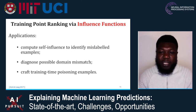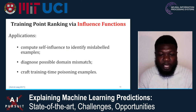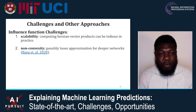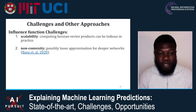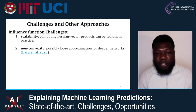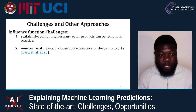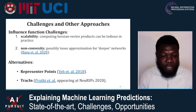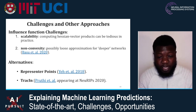You can use this approach to identify mislabeled examples, diagnose domain mismatch, and even craft training-time poisoning examples. There are a few challenges. One is scalability: deep networks have many parameters, making Hessian computation generally infeasible, so you must resort to Hessian-vector products. A recent paper by Basu et al. also showed that the influence approximation can be quite loose for non-convex losses, especially for models with many layers. Alternatives include Representer Points by Yeh et al. at NeurIPS 2018 and TracIn by Pruthi et al. appearing at this NeurIPS.